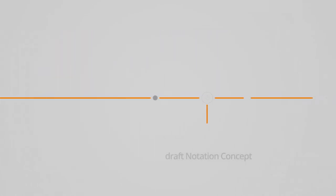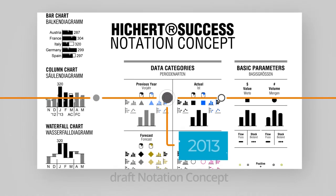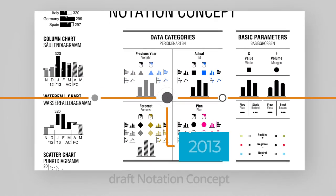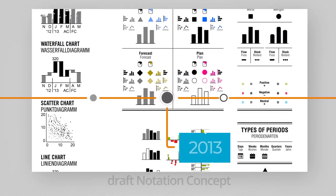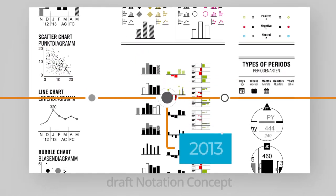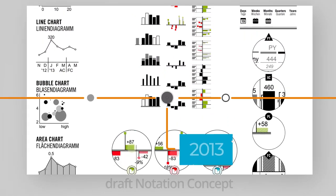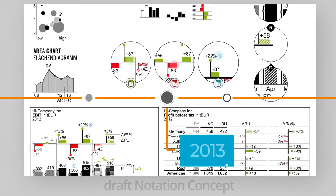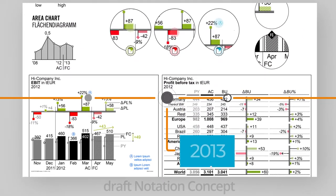In the years 2012 and 2013, I developed a new poster concept called the notation concept, where the old colors for the data scenarios were already replaced by solid, outline, and hatched.